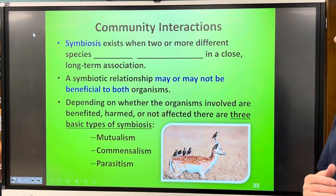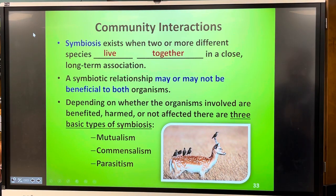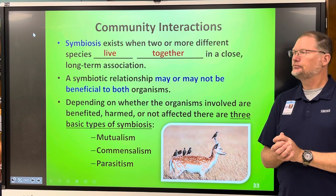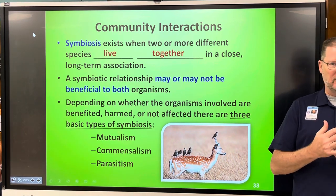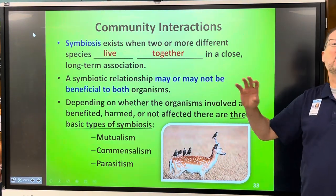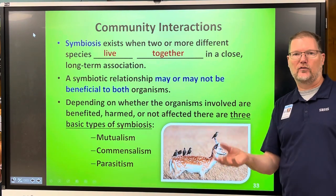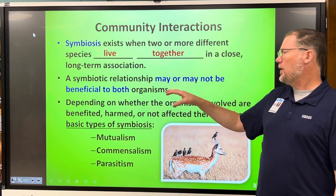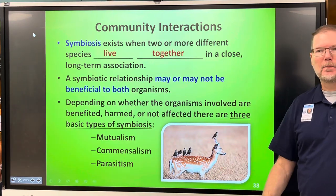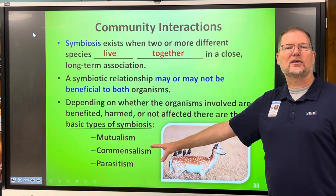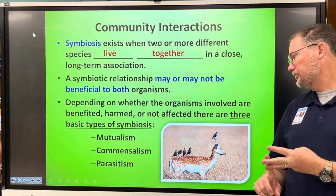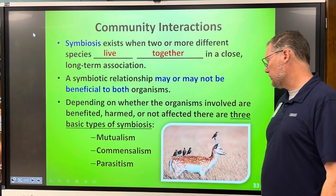Symbiosis, at the bottom of page five, is when two or more species live together so closely that they form a long-term association. There are several different kinds. The symbiotic relationship may or may not be harmful or beneficial depending on whether the organisms involved are benefited, harmed, or not affected at all. They fit into one of three basic categories: parasitism, mutualism, or commensalism.